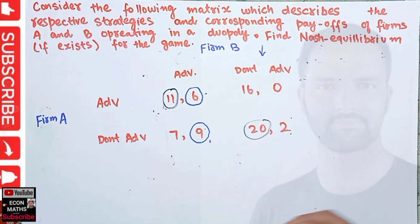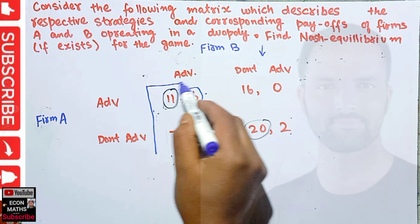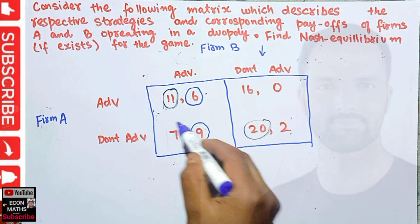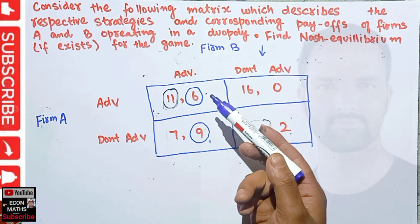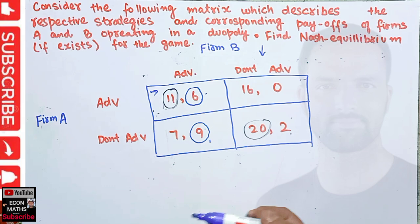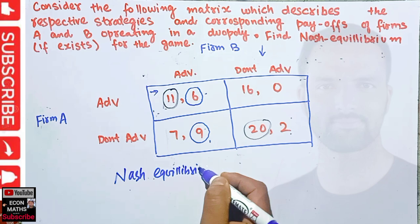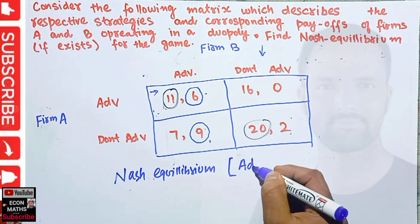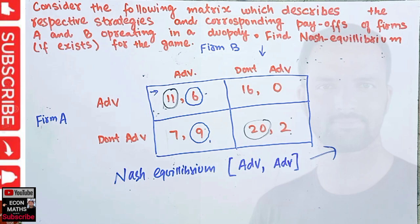Since there is one cell where both values are encircled in this two-player game, we say the game has a Nash equilibrium. The Nash equilibrium for this game is (Advertise, Advertise) — meaning if both firms choose to advertise, that strategy pair constitutes the Nash equilibrium.